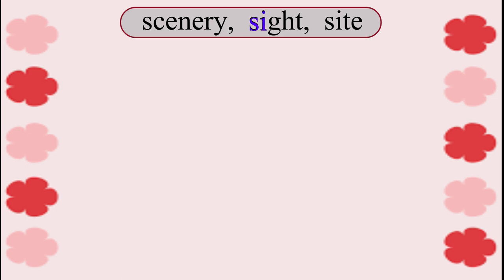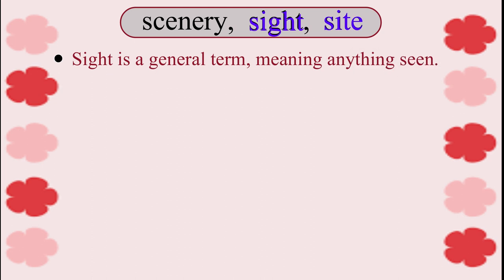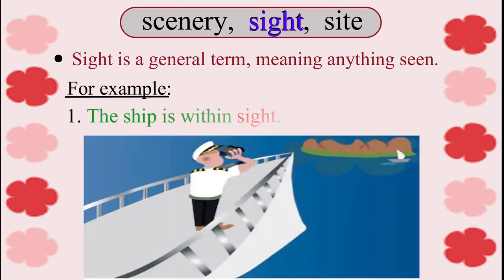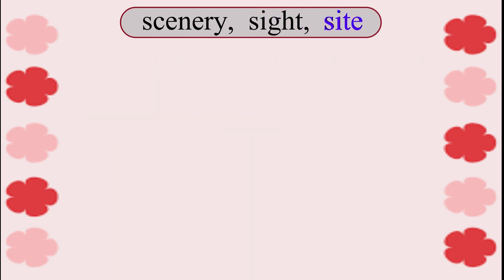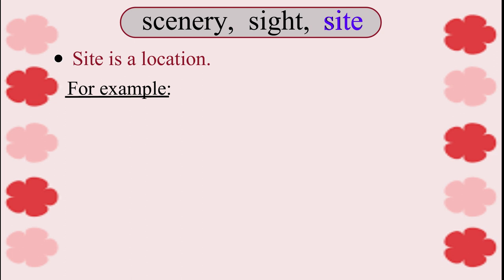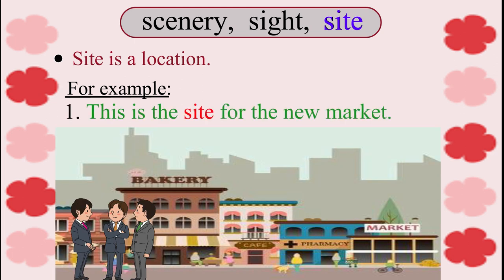The other word is 'sight'. Sight is a general term meaning anything seen. S-I-T-E 'site' is a location. For example: 'This is the site for the new market.'